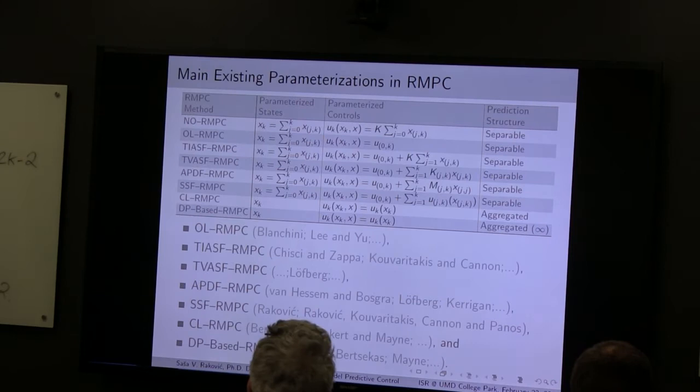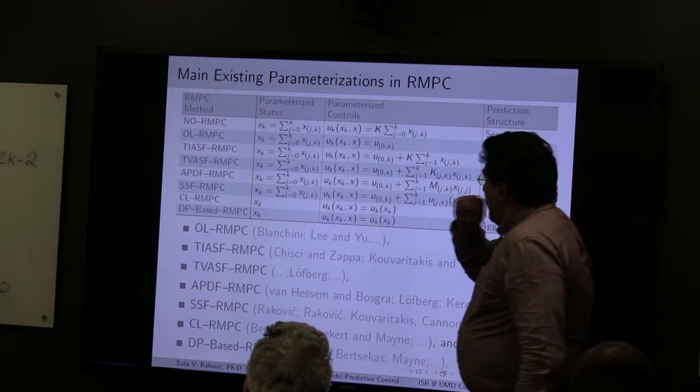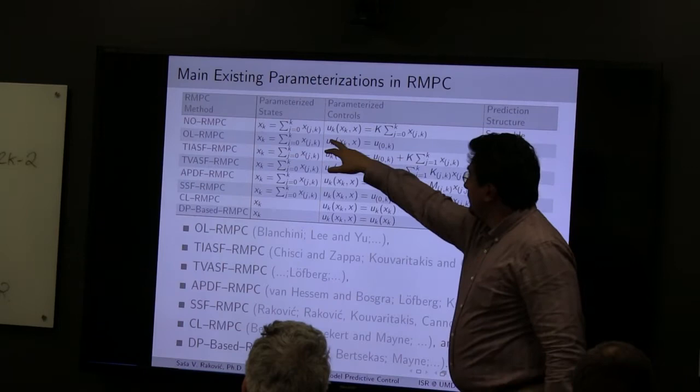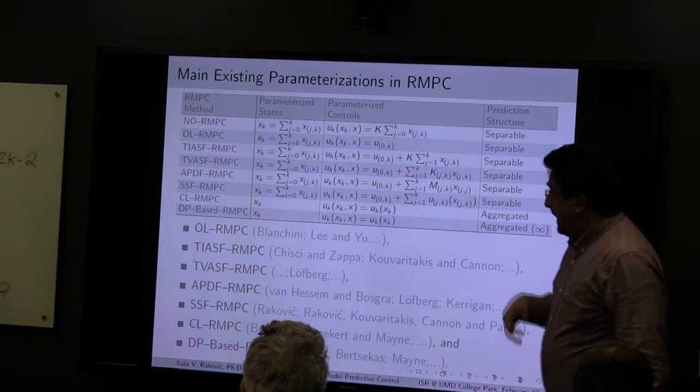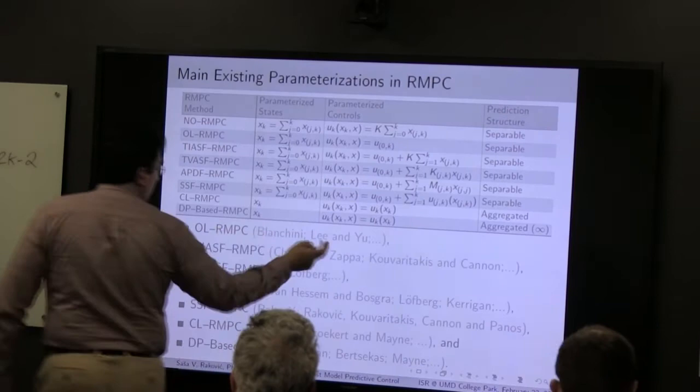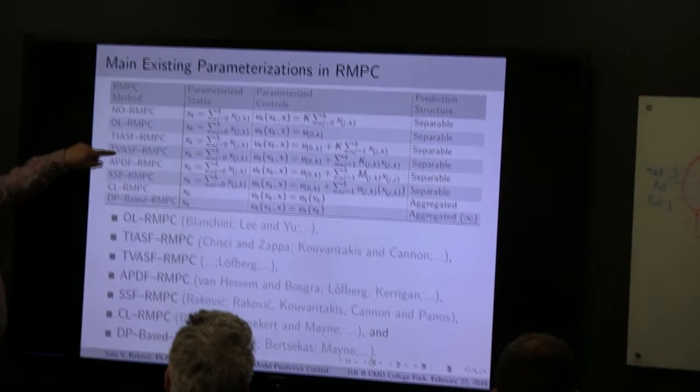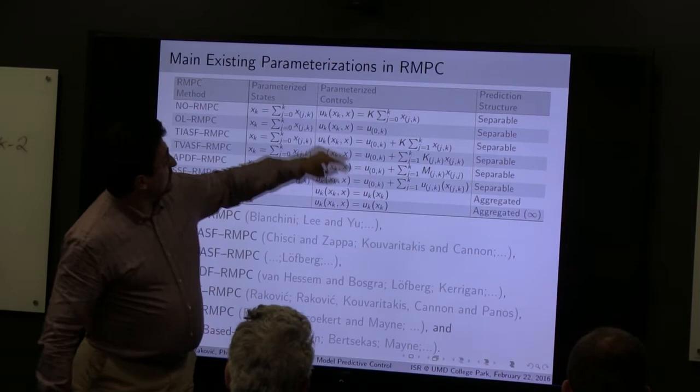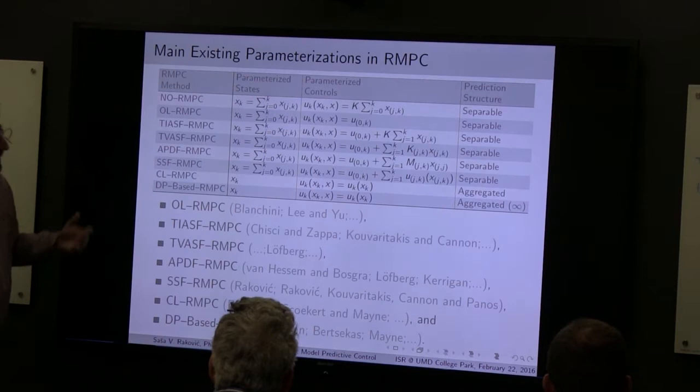Looking at the main existing parameterizations: the first is linear feedbacks. You can rewrite the controls as a linear combination of the components of the states — still separable. With open-loop control, you apply a single control regardless of which state component. This was proposed in early works. For a time-invariant affine state feedback, you take the sum of an open-loop part and a linear feedback part. You can go further and do time-varying affine state feedback by introducing matrices K_{jk}.